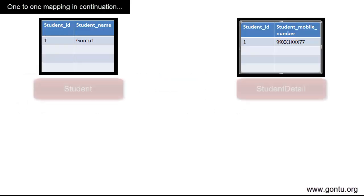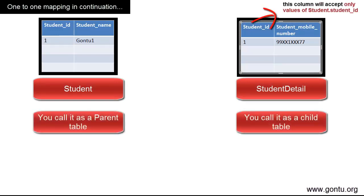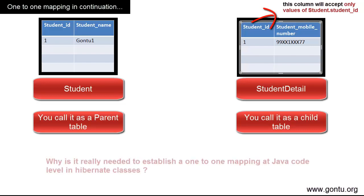One-to-one mapping is a relationship you establish between two tables in a database. One table becomes parent and the other one becomes child, and then you do the same thing at Java code level in your Hibernate classes. But a big question will always haunt you: when you already established a one-to-one relationship between two tables in a database using a foreign key reference or constraint, then why again do the same thing in your Java classes?